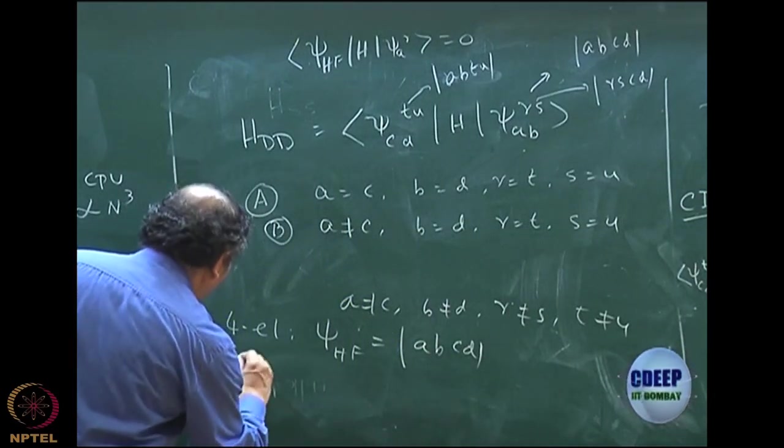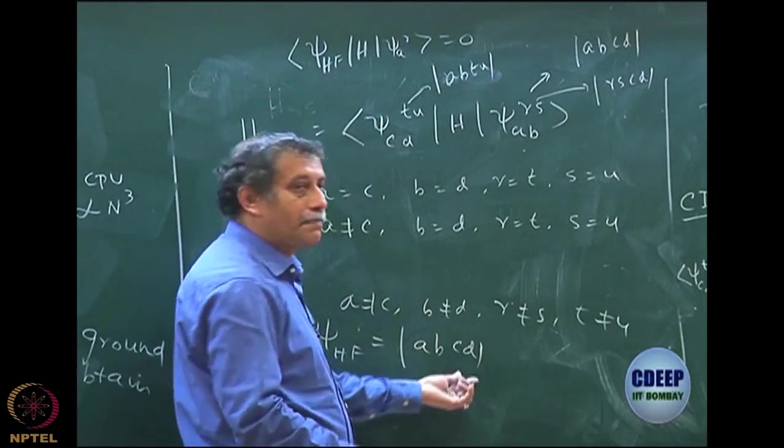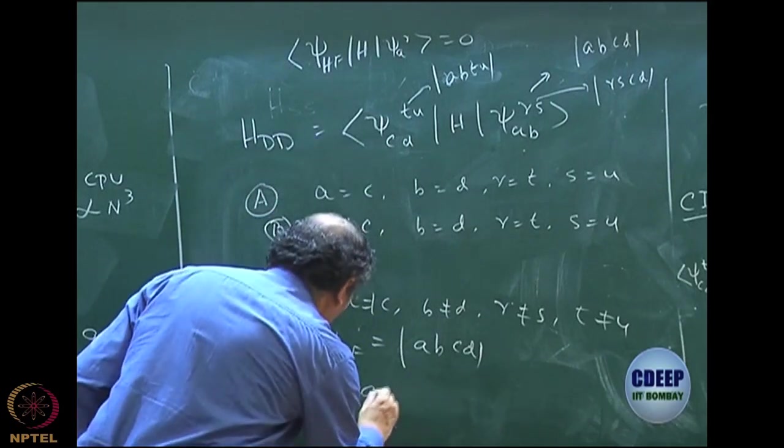Then I am writing what is psi CDTU, psi CDTU is CD replaced by TU, you should be able to write this. So it is AB TU, correct?